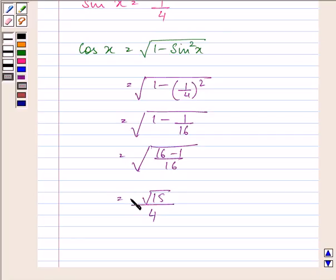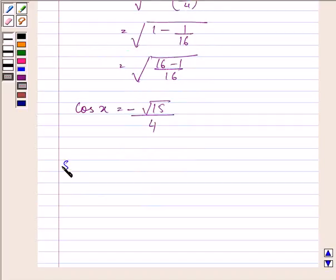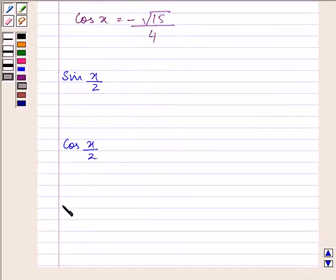So we have the value of cos x as -√15/4. Now we can easily find out sin x/2, cos x/2, and tan x/2.